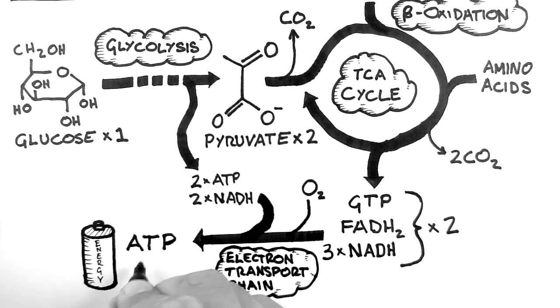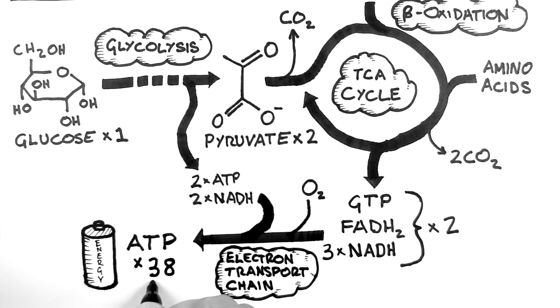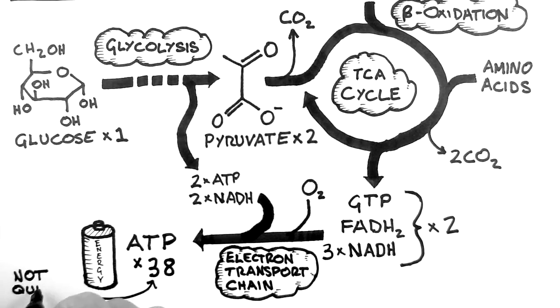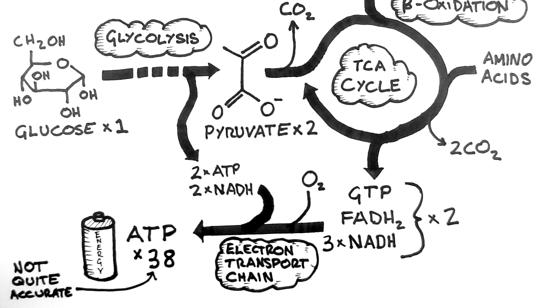All in all, one molecule of glucose can create a maximum of 38 ATP. However, this is not really an accurate number, as some of the energy is used moving all these molecules into different parts of the cell. So the actual number depends on how you decide to count the ATP.